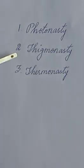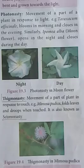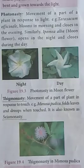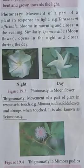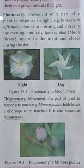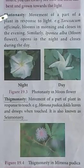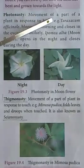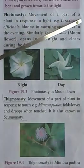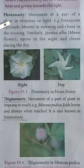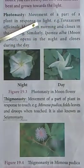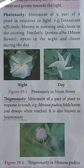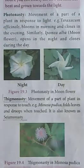Nastic movements are classified into photonasty, thigmonasty, and thermonasty. First, we will see photonasty. Photonasty is the movement of a part of a plant in response to light.